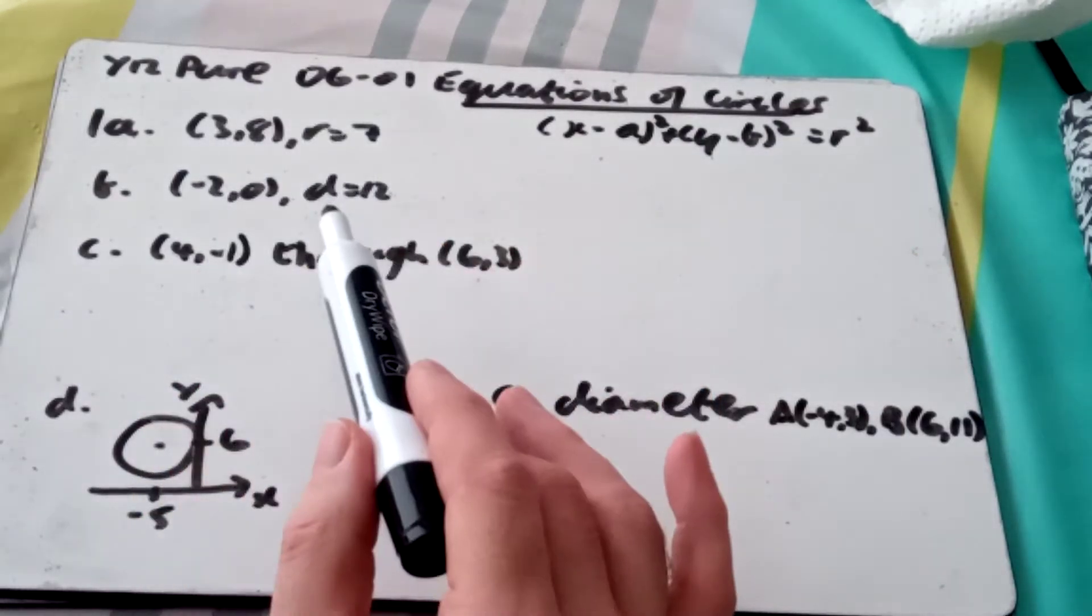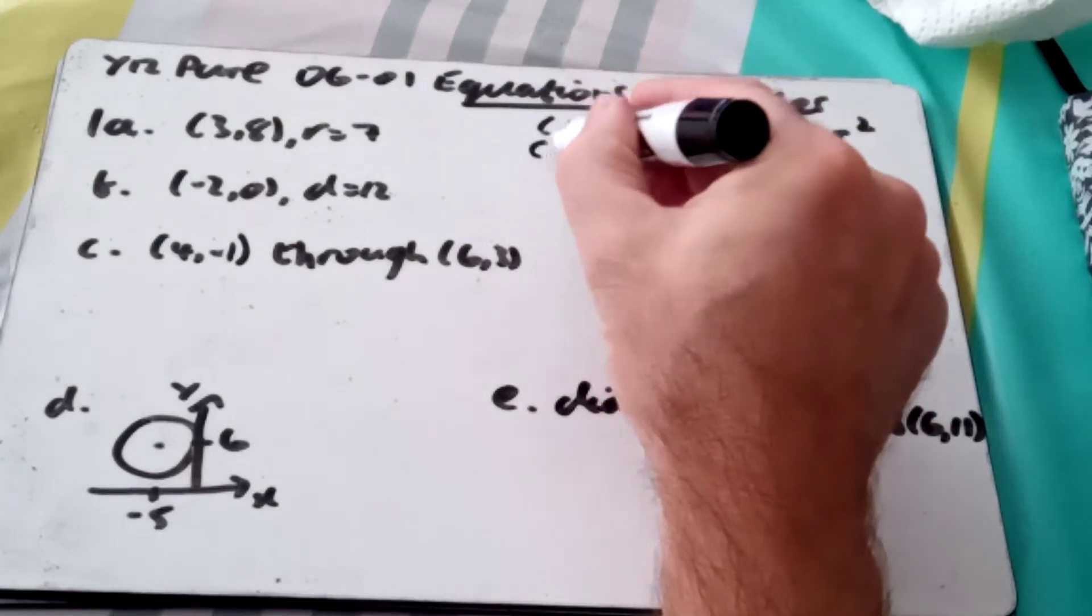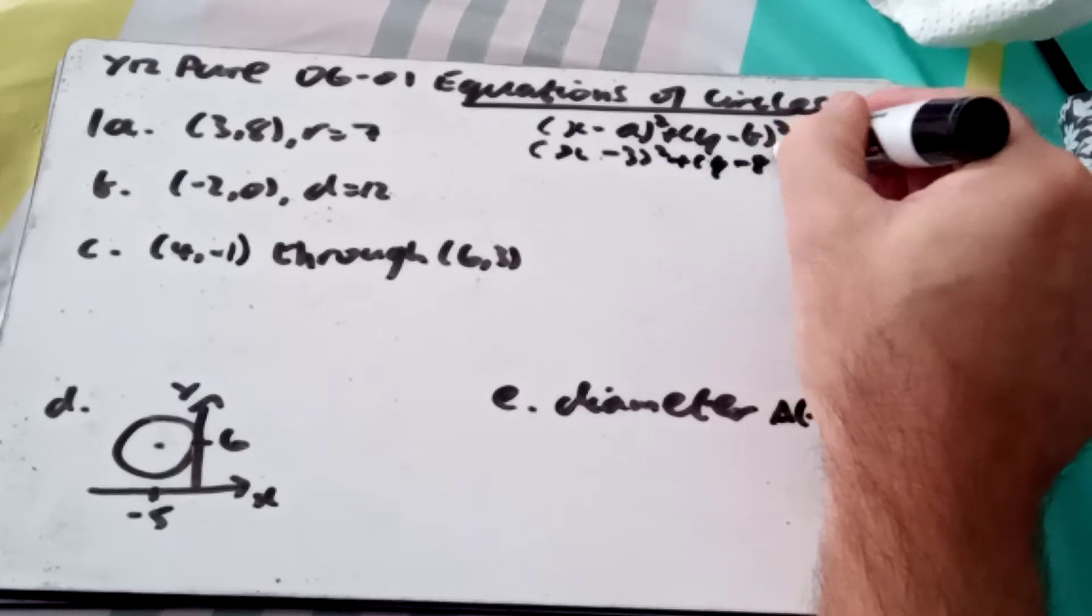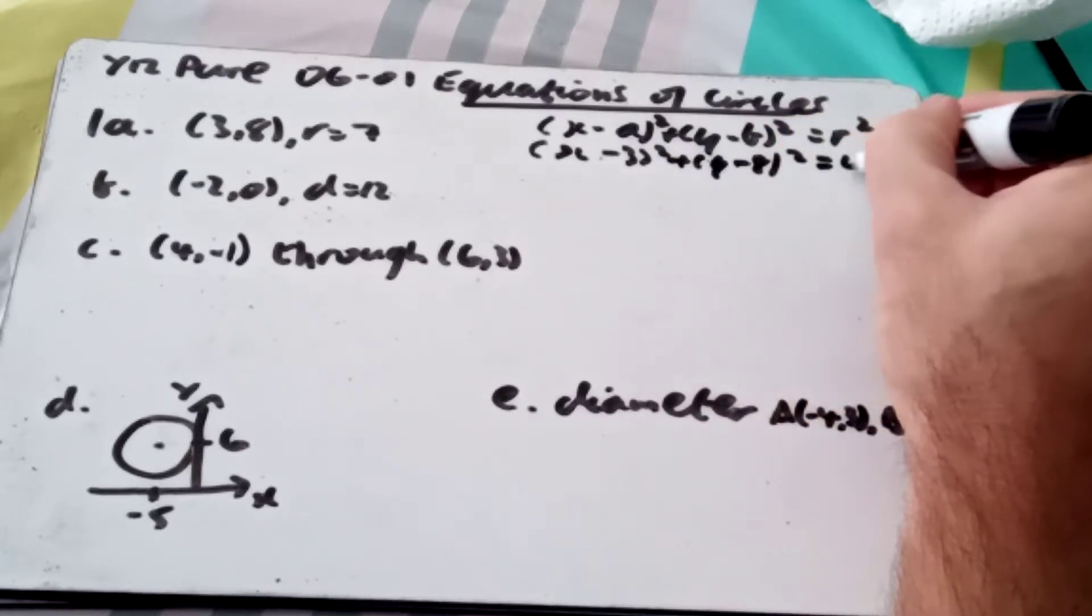So for example, center (3, 8), radius equals 7. My equation in this case will be (x - 3)² + (y - 8)² = 7², which is 49.